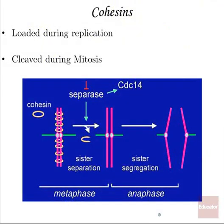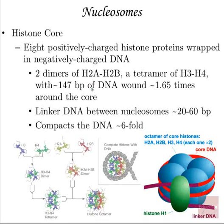Cohesins are cleaved during anaphase by the enzyme separase, which acts at the end of metaphase. Separase cleavage allows sister chromatids to be segregated into individual cells. After replication, spindle microtubules attach to kinetochores and pull in opposite directions until cohesin proteins get cleaved, allowing the cell to proceed into anaphase.